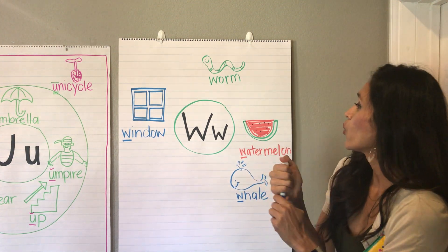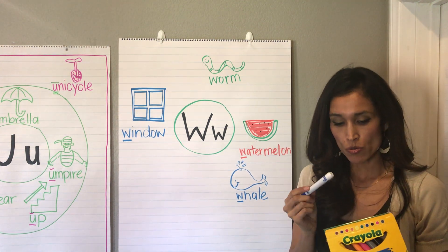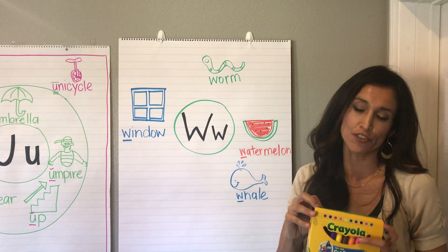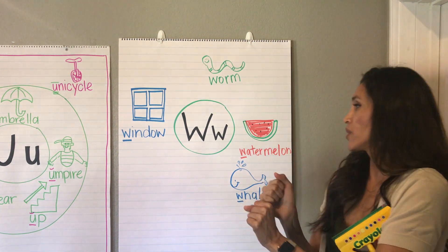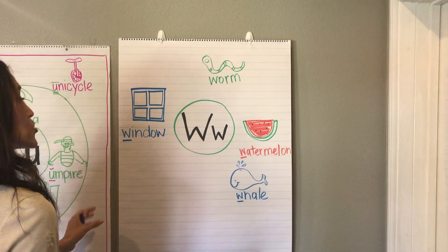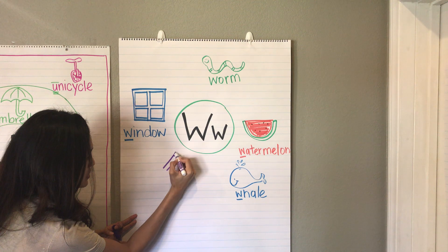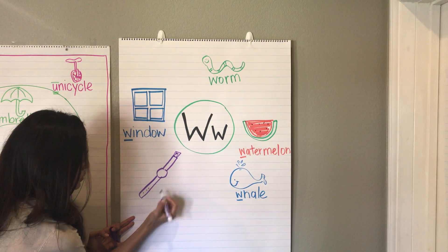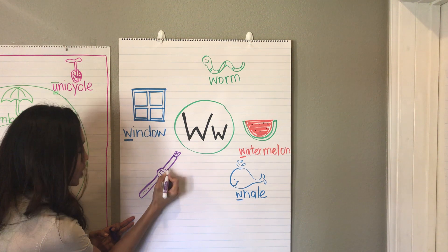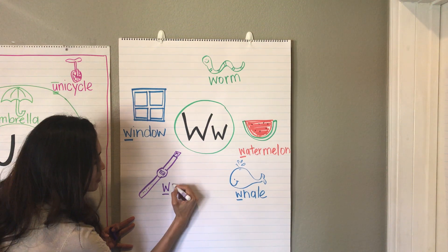So far I've got window, worm, watermelon, whale. And I think I'm also going to do a watch — that'll be fun. I have a watch that I wear all the time; that's actually how I do my videos, using my watch. So we're going to put a watch here. I'll do one side that has the buckle where you tie it in, and the other side where you put the holes through. This will be a digital watch, and I'll put the time in there. Watch — W.